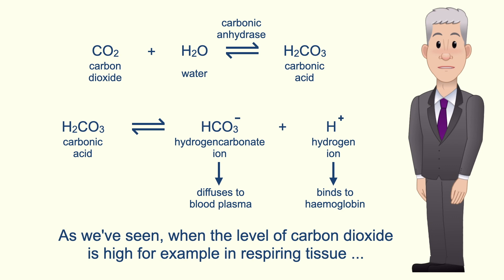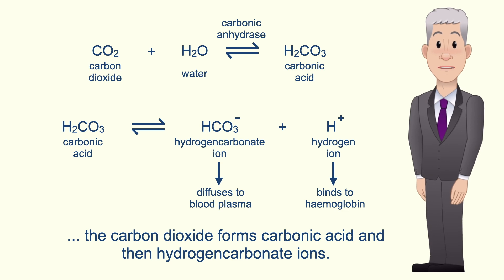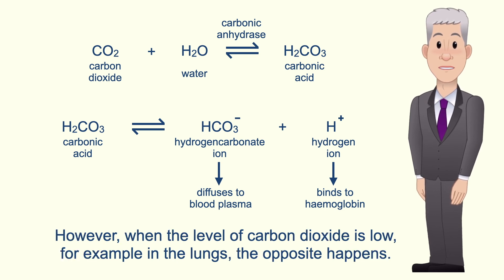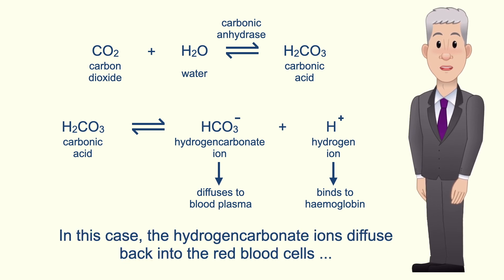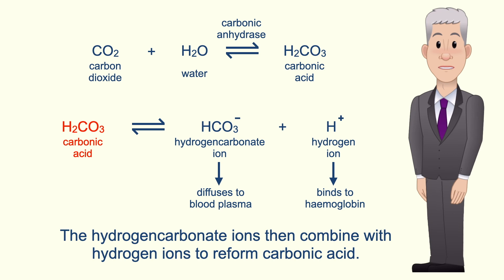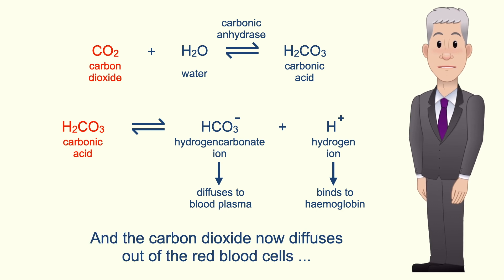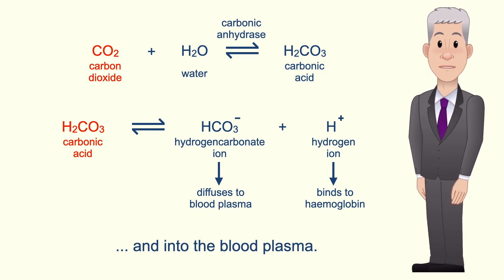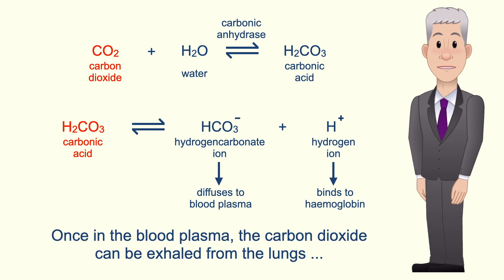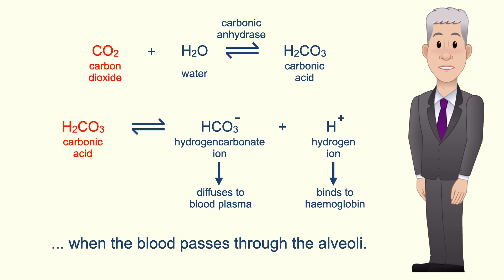When the level of carbon dioxide is high, for example in respiring tissue, the carbon dioxide forms carbonic acid and then hydrogen carbonate ions. However, when the level of carbon dioxide is low, for example in the lungs, the opposite happens. The hydrogen carbonate ions diffuse back into the red blood cells in exchange for chloride ions, then combine with hydrogen ions to reform carbonic acid. The carbonic acid is then broken down by carbonic anhydrase forming carbon dioxide, which diffuses out of the red blood cells into the blood plasma and can be exhaled from the lungs when the blood passes through the alveoli.